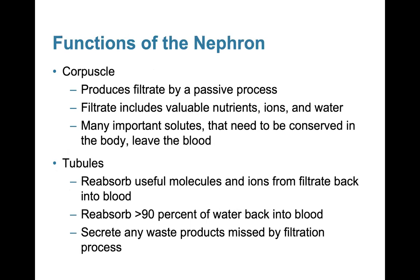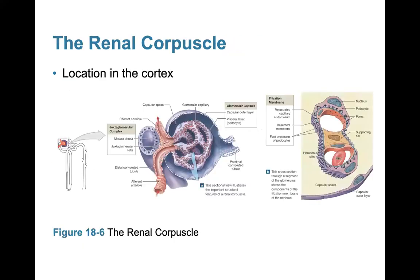The renal corpuscle produces filtrate by a passive process. The filtrate includes valuable nutrients, ions, and water. Many important solids that need to be conserved in the body leave the blood, and the tubules then reabsorb those useful molecules back into the blood. Reabsorption takes back about 90% of the water as well, and the tubules secrete any waste products missed by the filtration process. Blood enters via the afferent arteriole and, due to pressure differences, fluid leaves through the capillary bed and is picked up by Bowman's capsule, then travels into the PCT.